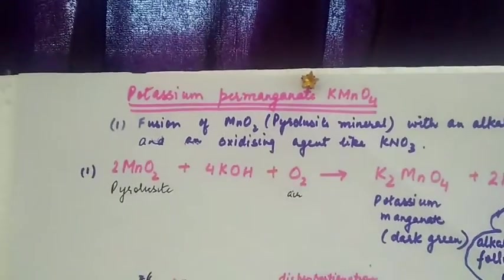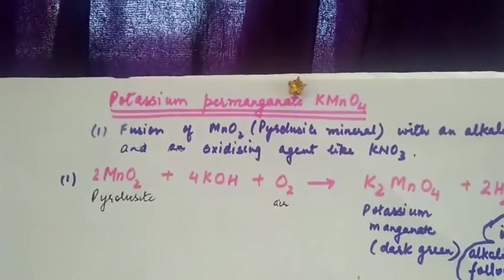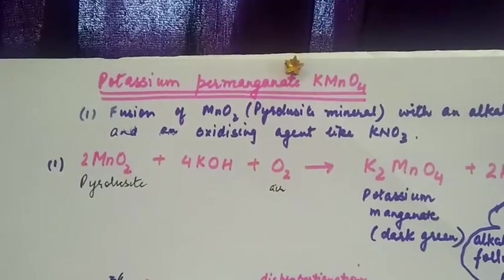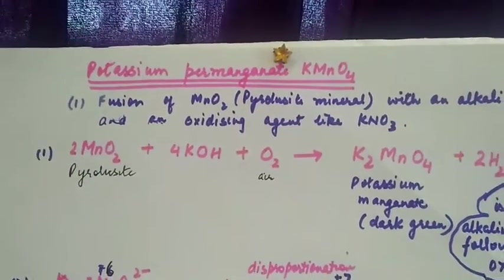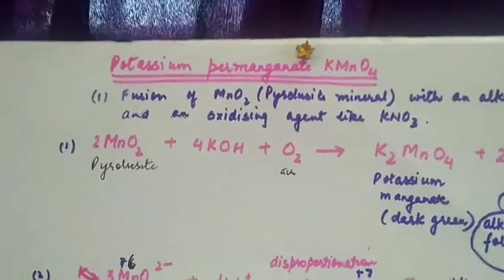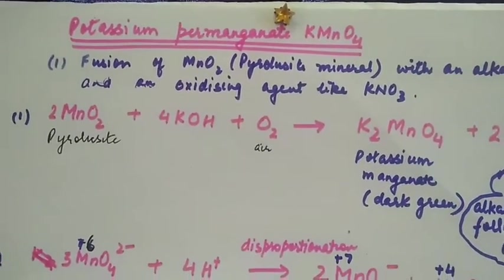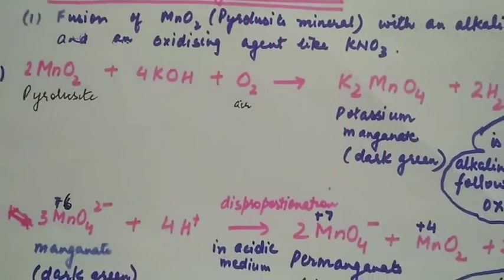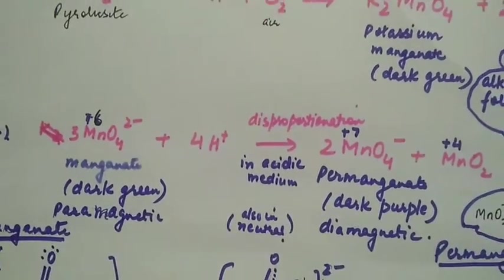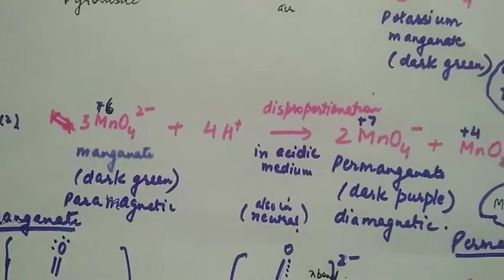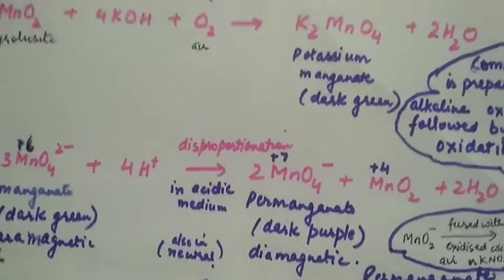First is preparation, which is done from pyrolusite mineral. There are two steps: first step is conversion of pyrolusite mineral into potassium manganate, and second step is oxidation of potassium manganate into permanganate.